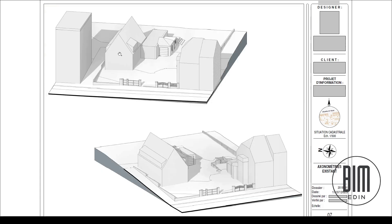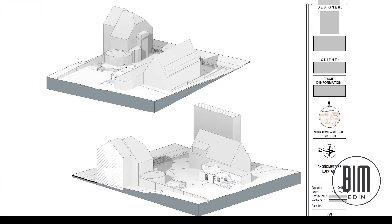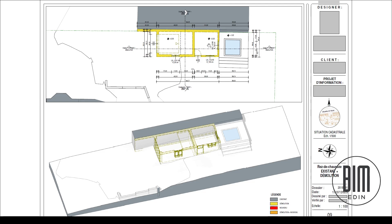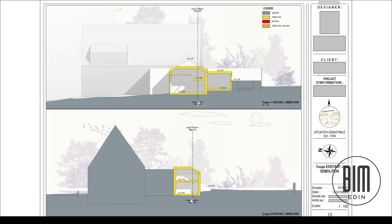Now those are the demolition phases. You can see the legend where we have yellow color for demolition. The isometric view and floor plan view show the parts of the buildings that will be demolished. In the sections, we also have shown the parts that will be demolished.